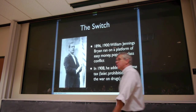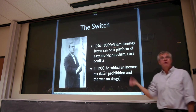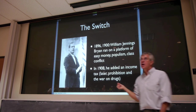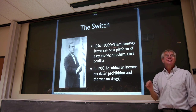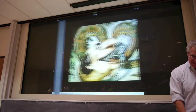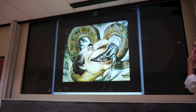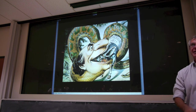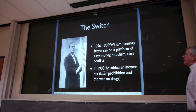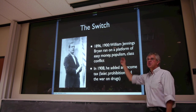The switch was really due primarily to William Jennings Bryan. He was never president of the United States, but he did run three times and lost every time. Nevertheless, he did take over the Democratic Party — something that cartoon illustrates from around 1908, showing Bryan swallowing the Democratic Party whole. And that basically did happen. He ran on a platform of easy money, populism, and class conflict.